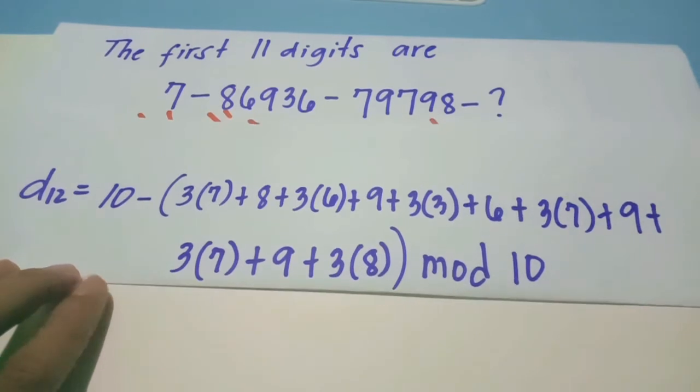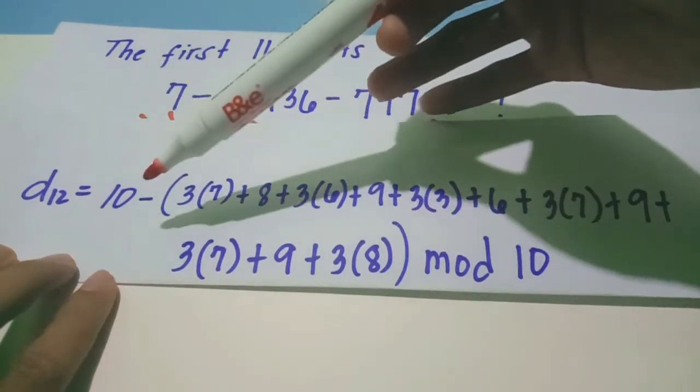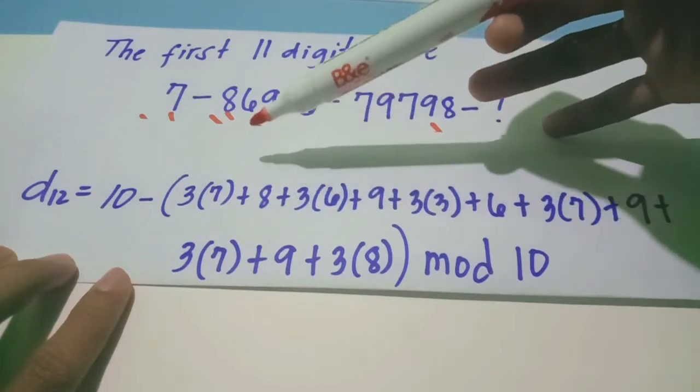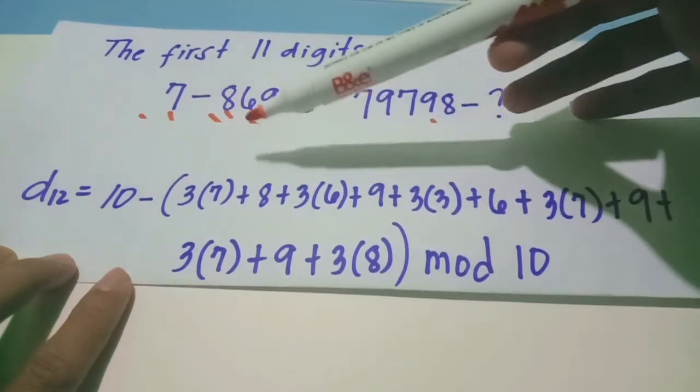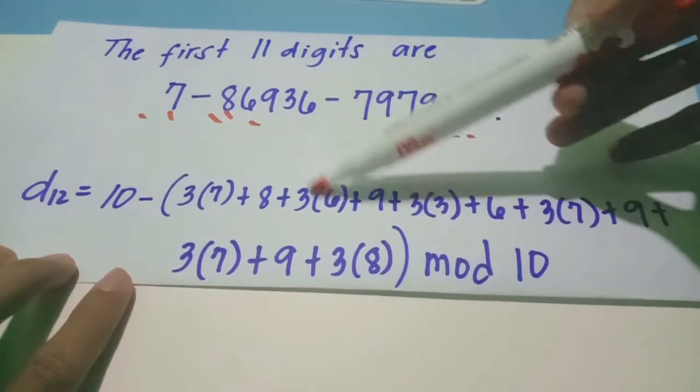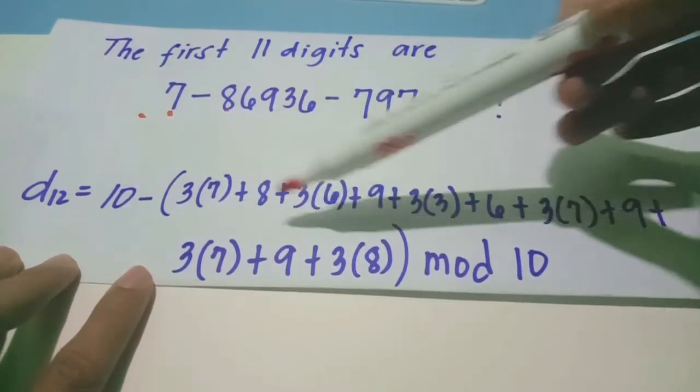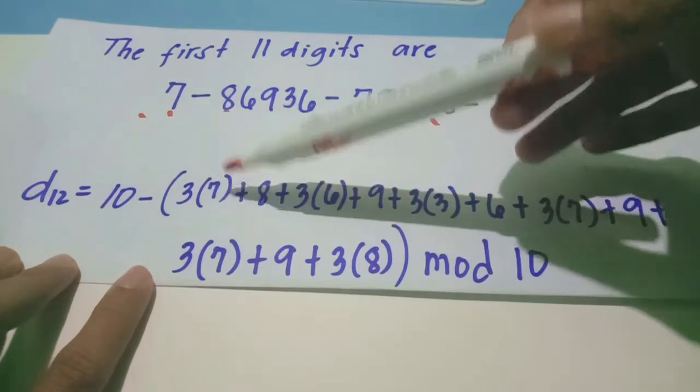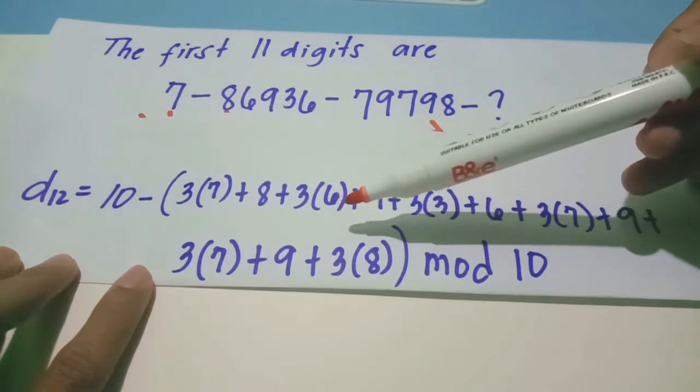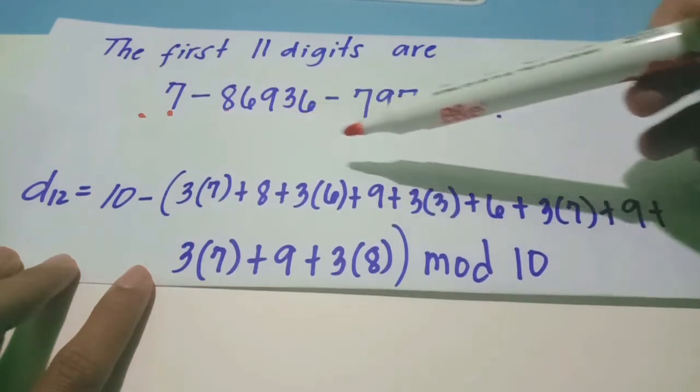Next, just simply substitute to the equation. We have D sub 12 is equal to 10 minus quantity 3 times D sub 1, which is 7, then D sub 2 we have 8, plus D sub 3 which is 6. Again, multiply all the odd numbers starting at position 1, 3 times 7, and then 3 times D sub 3, value is 6, plus 9, D sub 4, D sub 5, 3 times 3.